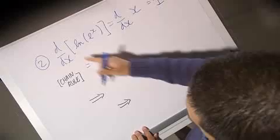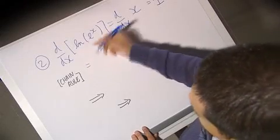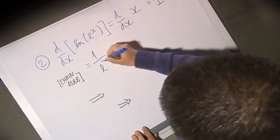On the other hand, you may use the chain rule, so this gives you 1 over e to the x times the derivative of e to the x, which is what you want to compute.